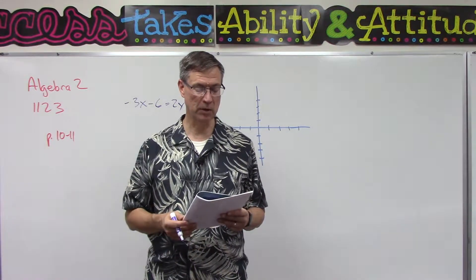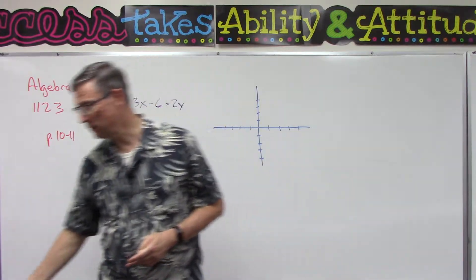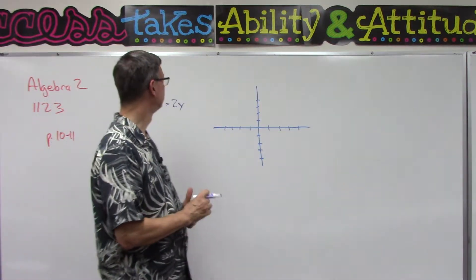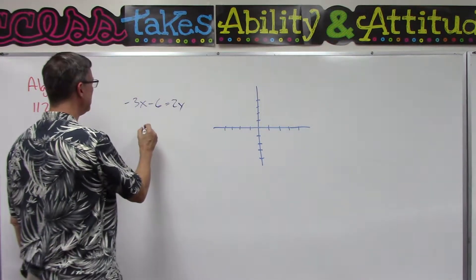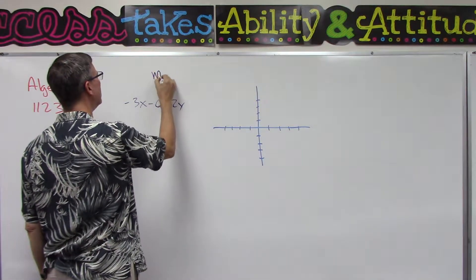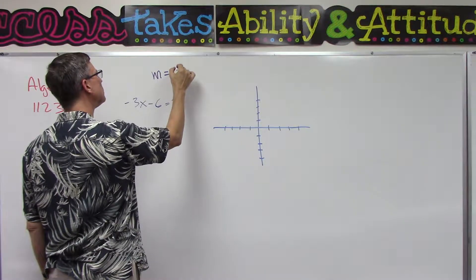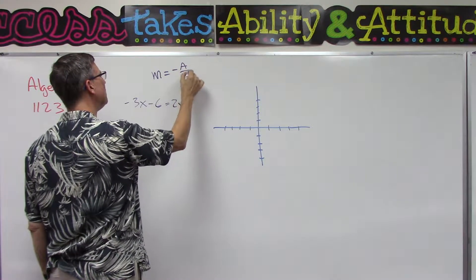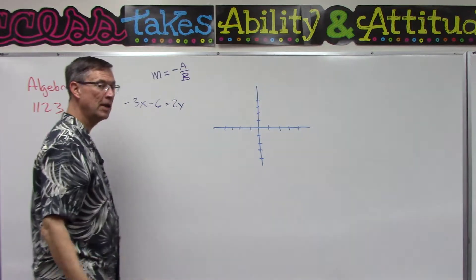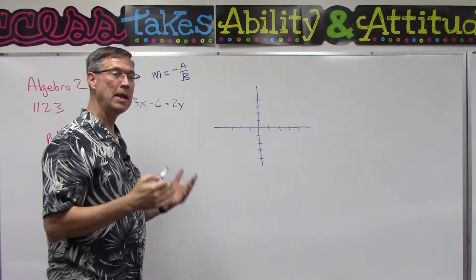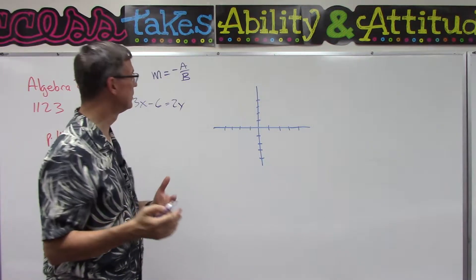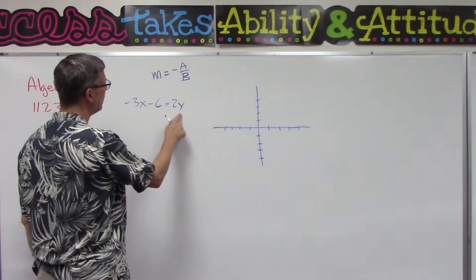First thing we want to do is figure out what is the slope. The slope, remember from the previous lesson, is negative A over B, but we have to have it in the form ax + by = c. I'm going to take one of the problems that you have in your lesson and let's work on this together.